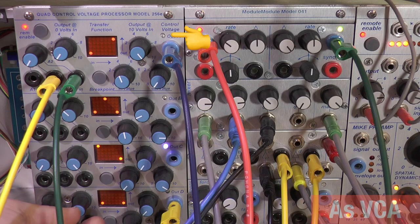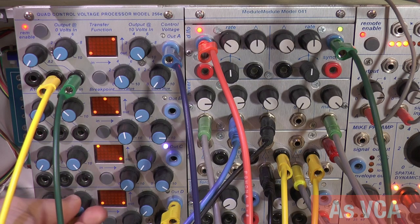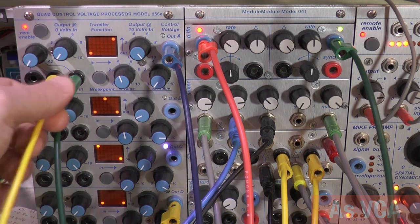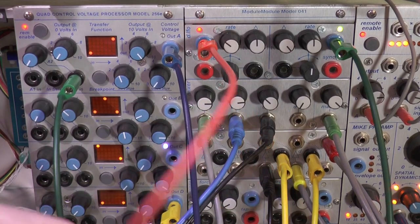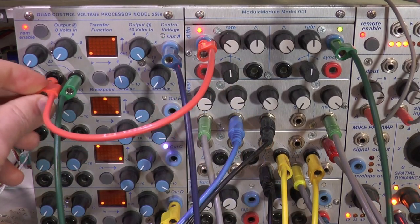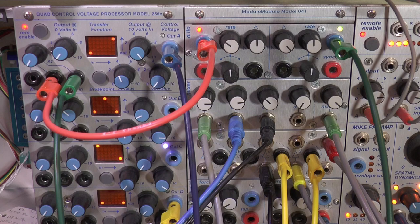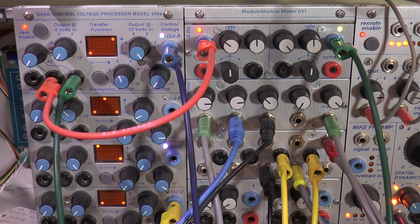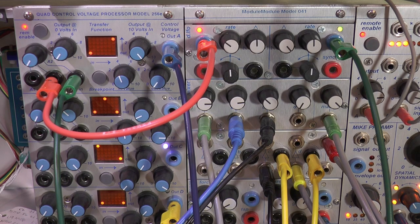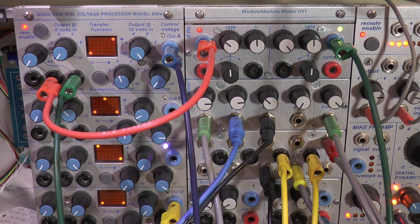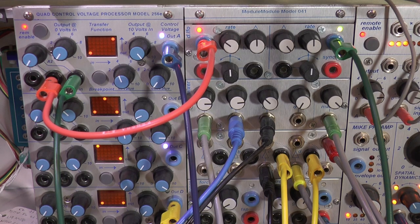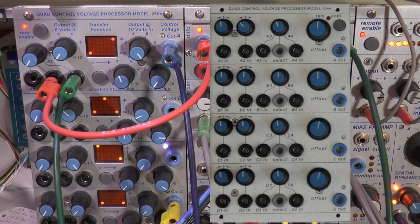So that could be obviously on a touch plate control or even another LFO. So let's stick in the slow triangle. All right, pretty self-explanatory. Again, the 254e from Studio Electronics does similar.